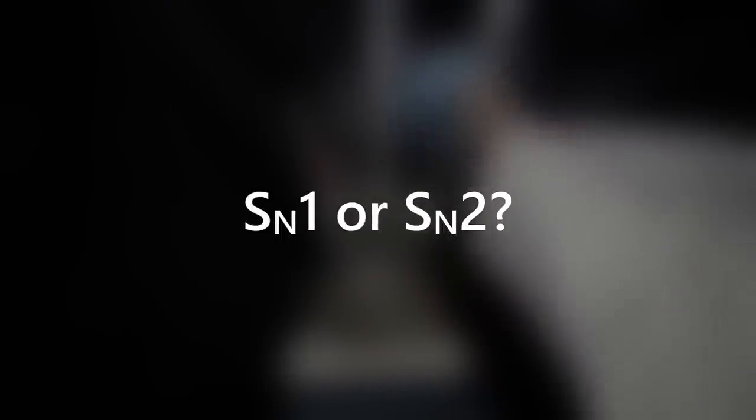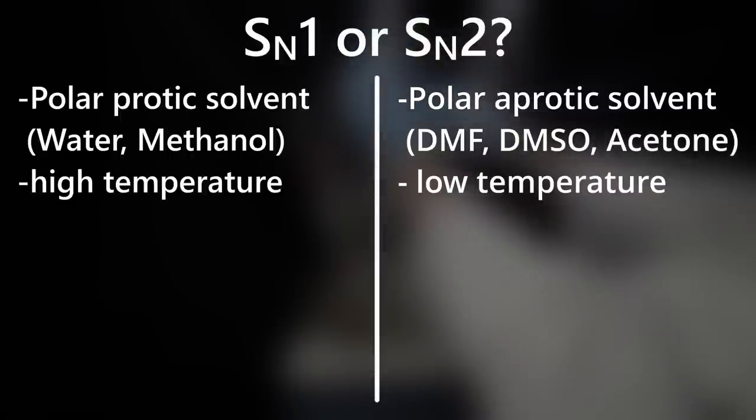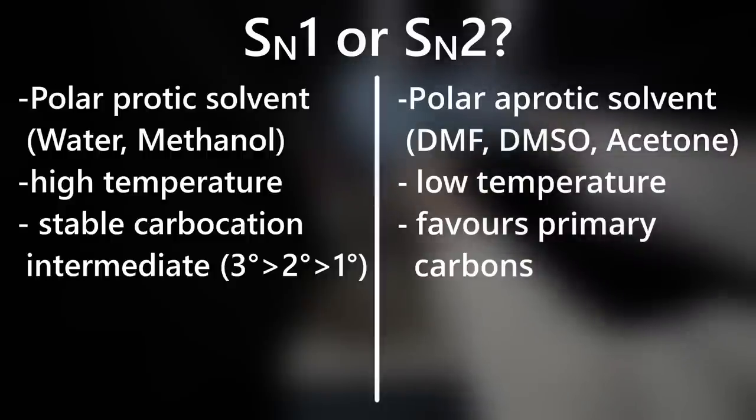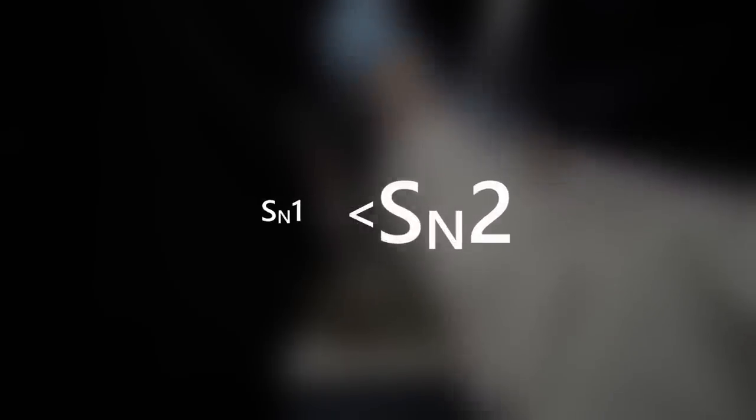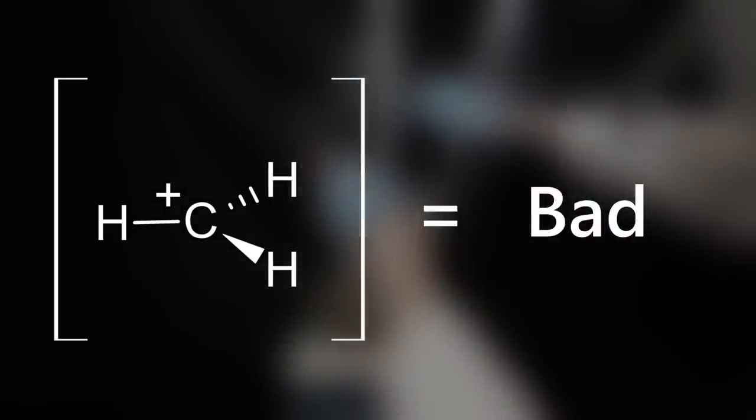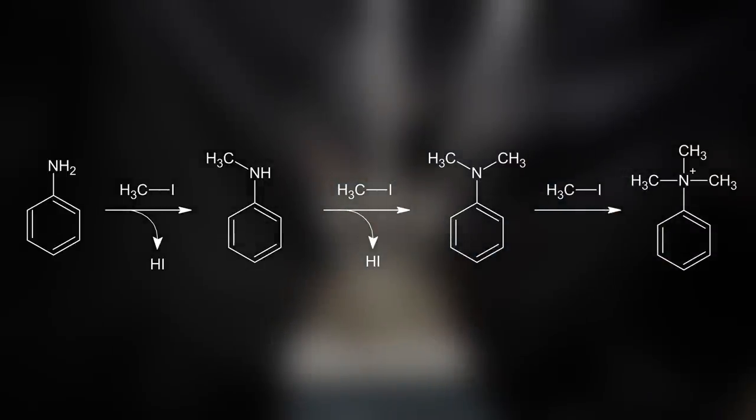Which version takes place is influenced by many factors like solvent type, reaction temperature and stability of the carbocation. In this case it's pretty easy to say that the reaction will strongly favor SN2 as methyl cations are usually avoided by the chemistry gods. This process will then continue until the amine has been fully methylated.